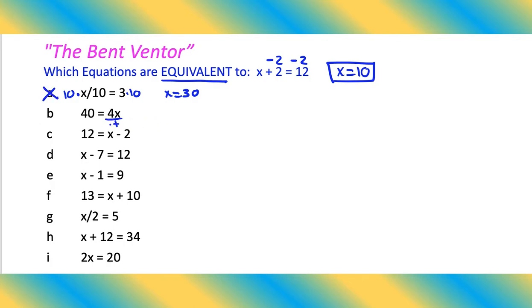Let's divide both sides by 4 right here. We would get x equals 10. Winner, B is equivalent to the original equation.